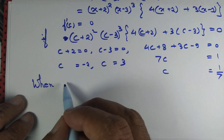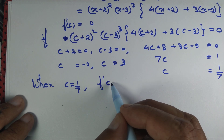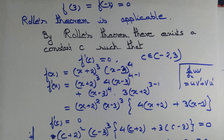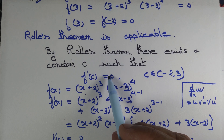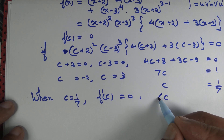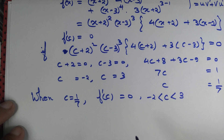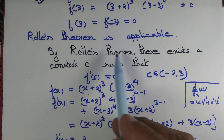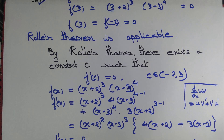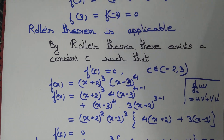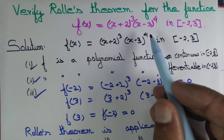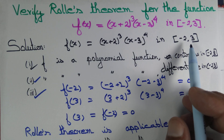We want c strictly between −2 and 3, so we reject c = −2 and c = 3, and choose c = 1/7. Since −2 < 1/7 < 3, we have found a constant c such that f′(c) = 0. Hence Rolle's theorem is verified for f(x) = (x + 2)³(x − 3)⁴ on [−2, 3].